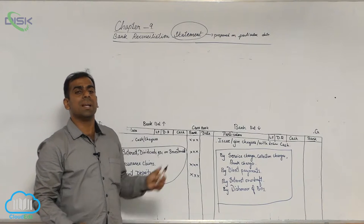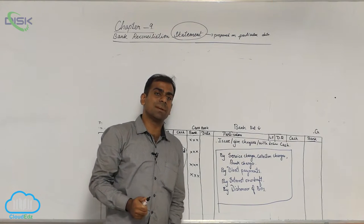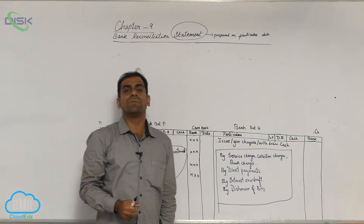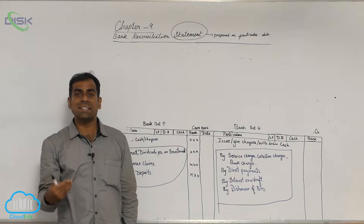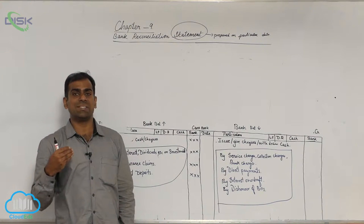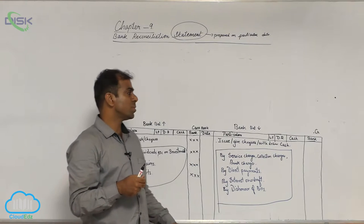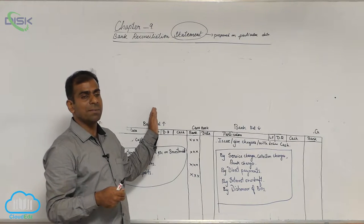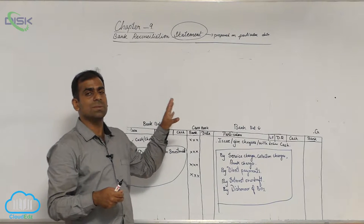So while comparing this passbook entries of a particular period with the same period with that of cashbook, sometimes you might come across some mistakes. Whenever you find some mistakes, what we call as errors because they are unintentional mistakes, we try to reconcile them and find out the reason as to why they are as such.